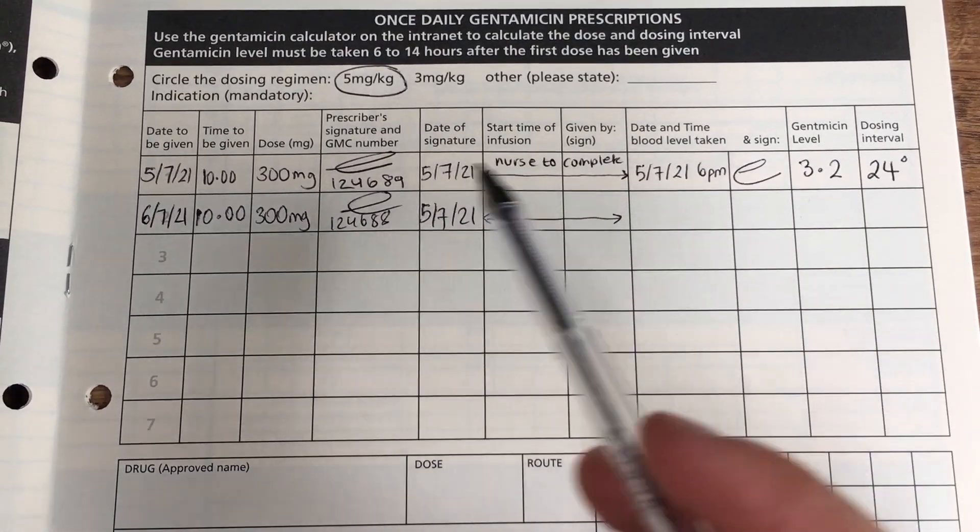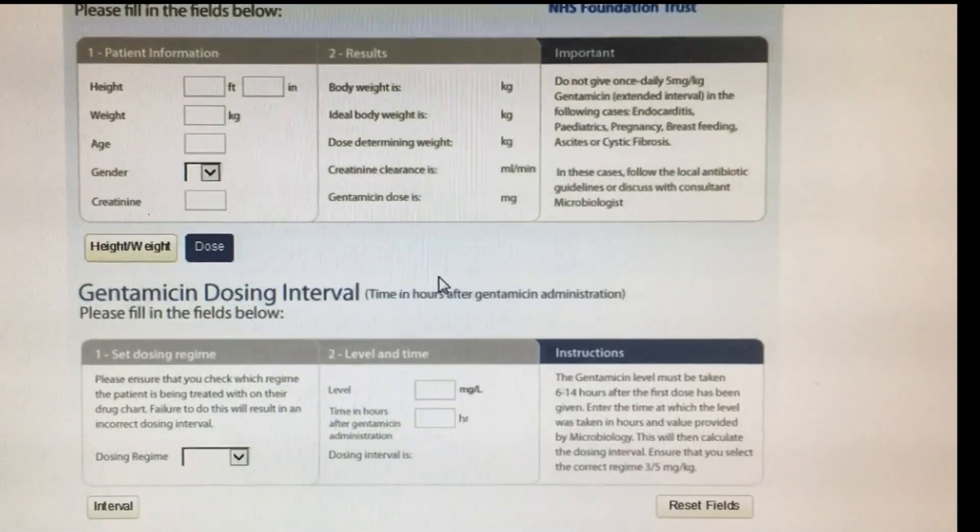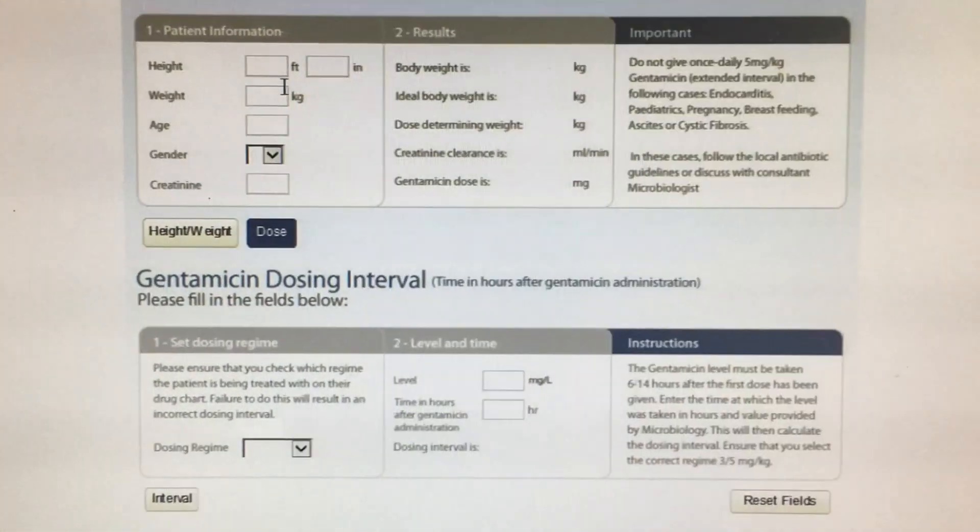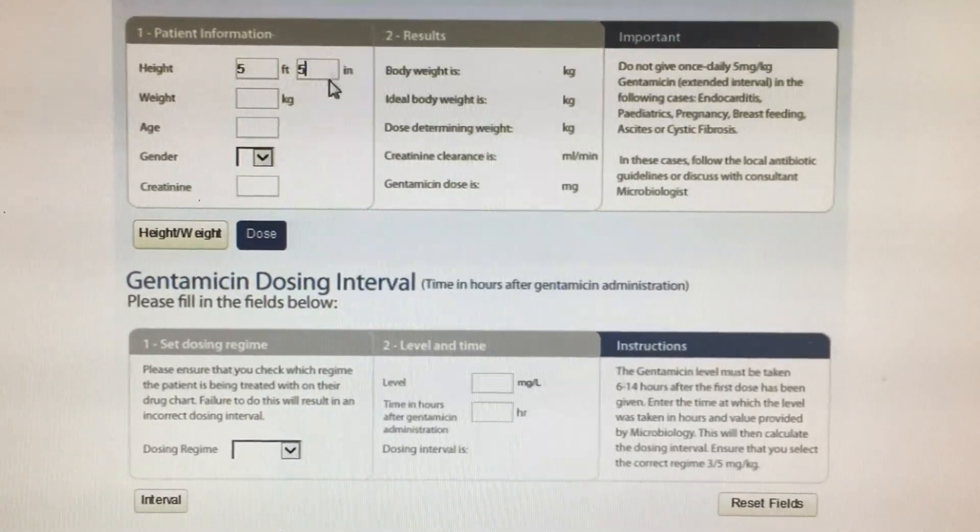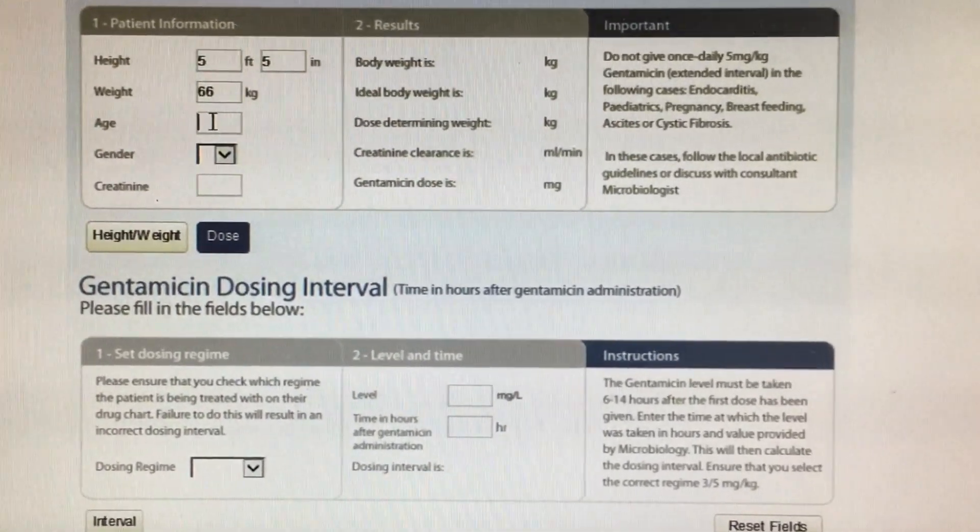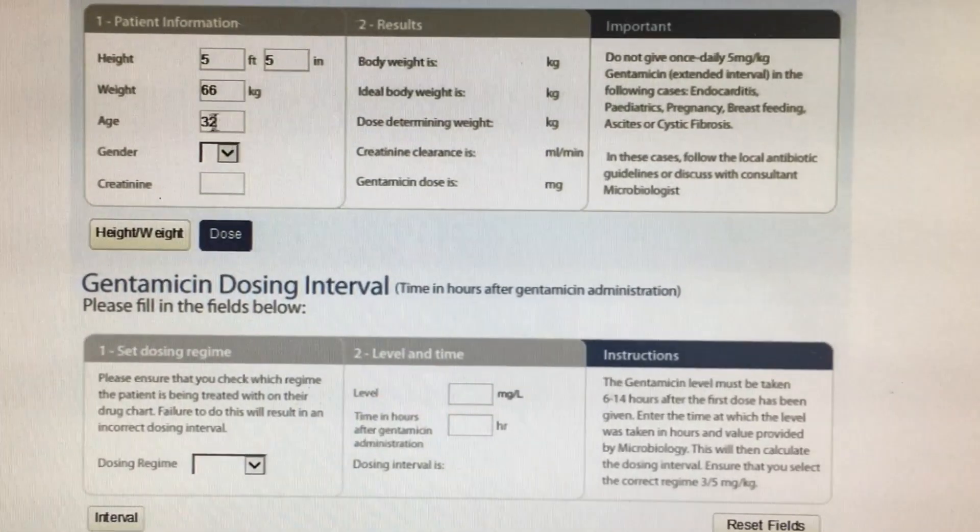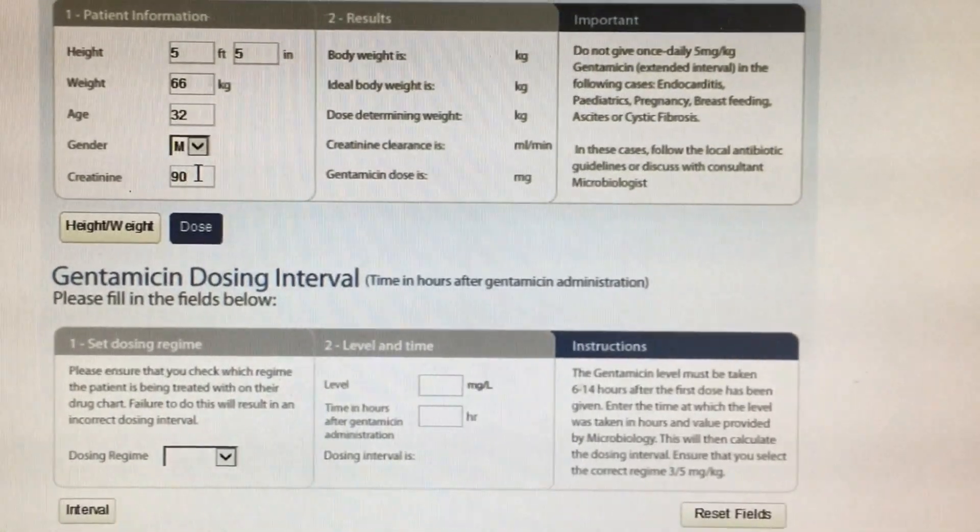And then you want to calculate the dosing interval. So, for this, we need the calculator. This is a calculator on my trust website, and I just click on the link. And here, I'm going to calculate the first dosing interval. So, that's whether the patient needs a regimen of 5 or 3 milligrams per kilo. So, you enter their height in feet and inches, their weight in kilograms. It's pretty self-explanatory. You enter their age, their gender, and their creatinine level. So, this is going to be a marker of how good their renal function is.